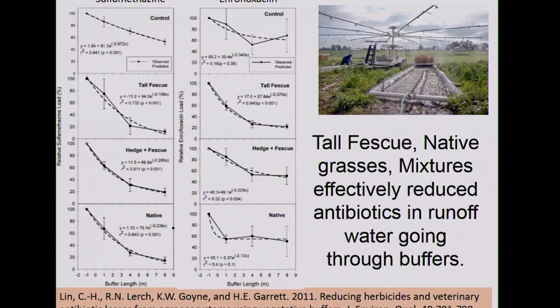A study done at Bradford Farm by Changho Lin, Dr. Lorch, Dr. Goyne, and Dr. Garrett used a rainfall simulator on plots about 16 meters long — 8 meters of feeding area and a buffer. Different buffers were compared: tall fescue, native grass, and mixtures. Even the control showed some degradation through the buffers. Tall fescue, hedge, and native grasses were much more effective at degrading antibiotics. Within about 4 meters of buffer, antibiotic concentration dropped from 100 percent to 20 percent. A similar study on three different herbicides showed comparable degradation as they passed through the buffer system.